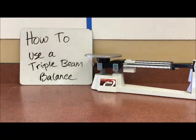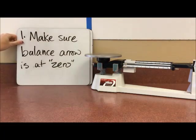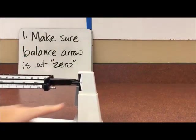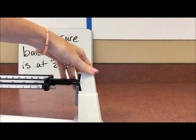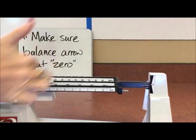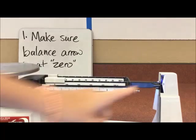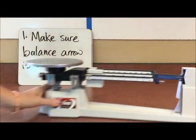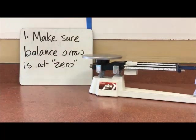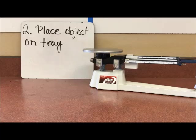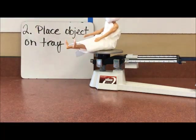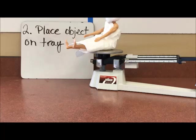First step, we've got to make sure that our triple beam balance is at zero. So if we notice here, there is a zero on this side. So we need to slide all of the slides over to zeros, and then make sure that this little guy here is at zero. So that is indeed the case, and now we can move on and start our measurement. Step two, we need to place our object on the tray. And Archimedes has volunteered to be our object for today. Once we have our object on the tray...